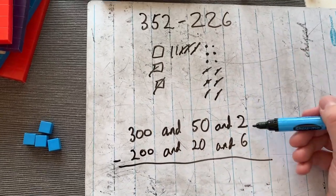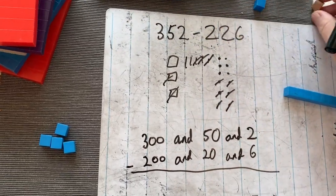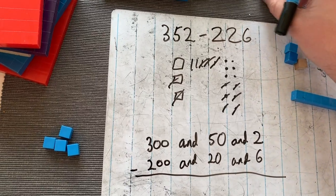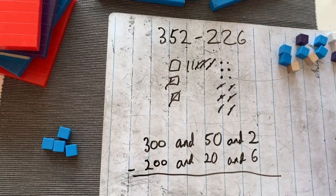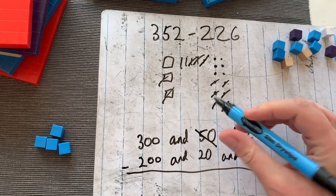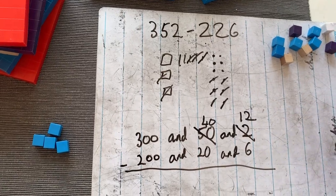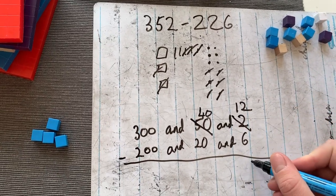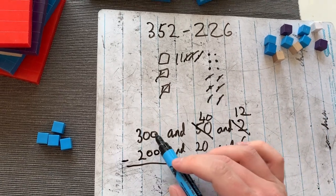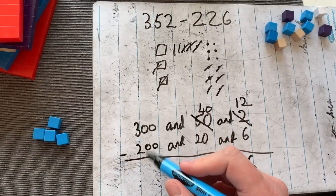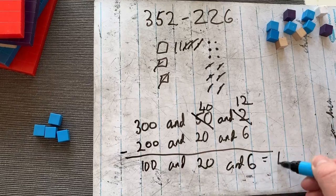Oh no, I can't take 6 away. So I'm going to exchange my 10 for 10 ones like we've done so many times that it shouldn't be a surprise. So I cross that out and I've exchanged that. That comes over here: 12. 12 minus 6 is 6. 40 minus 20 is 20. 300 minus 200 is 100. 100 and 20 and 6 equals 126.